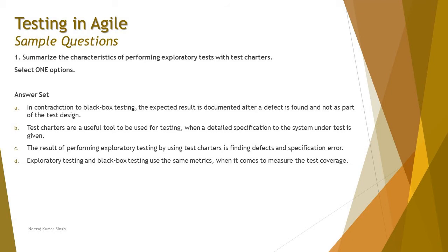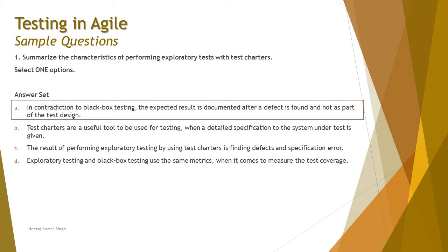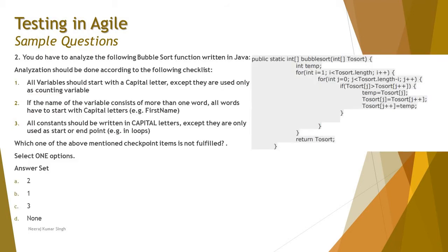Exploratory testing and black box testing do not use the same metrics for measuring test coverage because the test basis used to measure coverage does not exist in quality good enough to have a linkage between specification and test — it is obviously hard to define. The right option here is A: in contradiction to black box testing, the expected result is documented after a defect is found and not as a part of the test design. That is most important with respect to exploratory testing during execution of exploratory sessions.